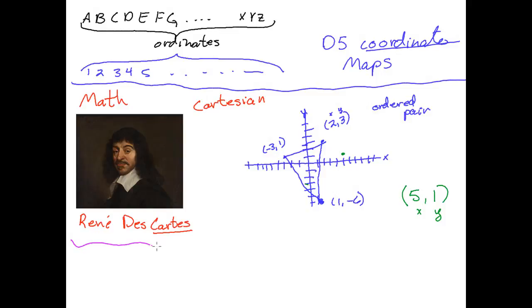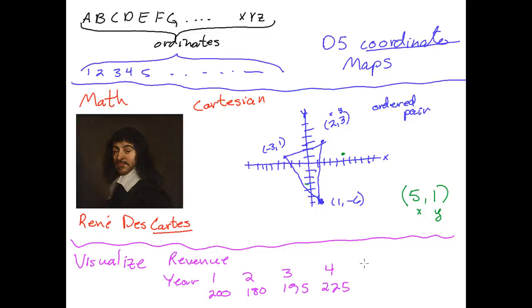The final thing that's exciting about coordinate systems and graphs is that they allow you to not just have numbers running around but you actually get to visualize how numbers change, how they grow. For example, if we have a revenue coming in from a small business we run: in year 1 we had $200, year 2 we had $180, year 3 we had $195, year 4, $225, and year 5, $270.